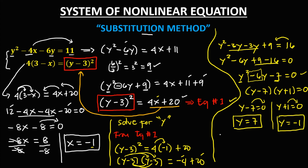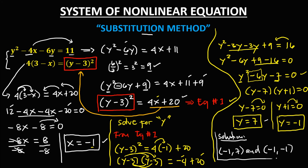So therefore, the solution of this nonlinear equation: if x is negative 1, y is positive 7; and the other one, if x is negative 1, y is also negative 1. So these are the solutions of this nonlinear equation.